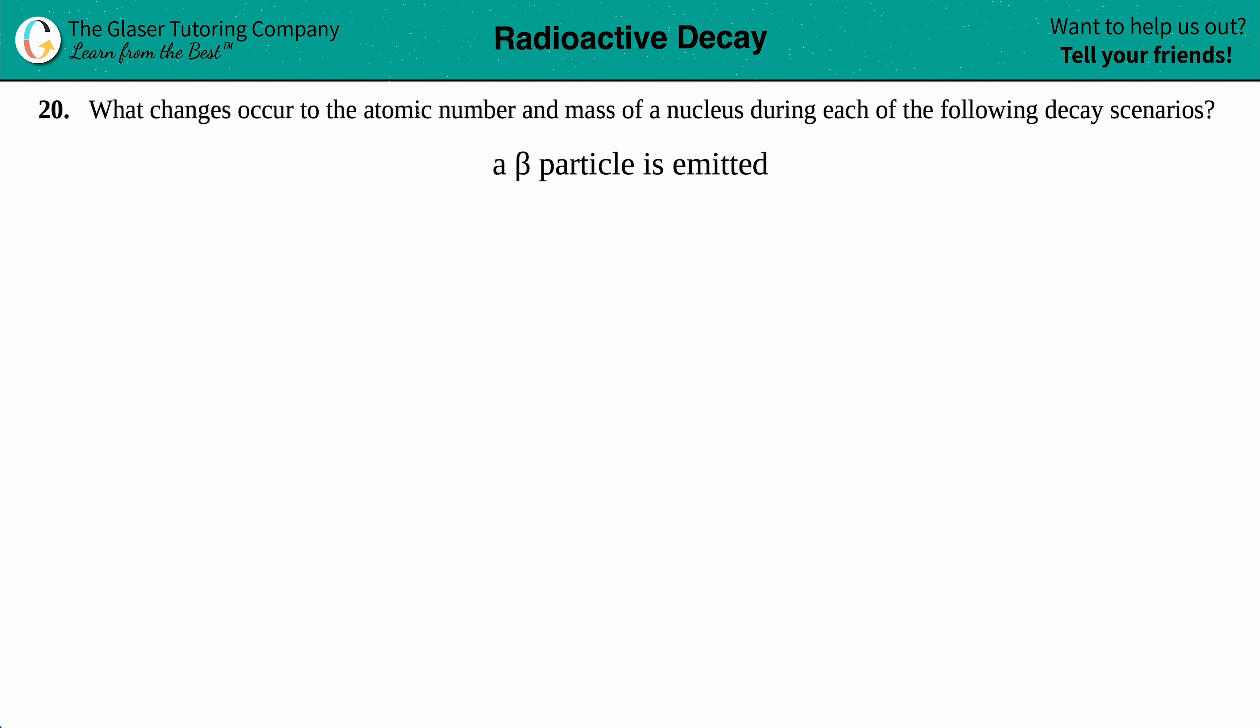Number 20. What changes occur to the atomic number and the mass of a nucleus during each of the following decay scenarios? And then we have when a beta particle is emitted. Okay, so we're talking about emission here. So anything that is emitted is talking about the decay mode of emission. So this is undergoing beta particle emission.